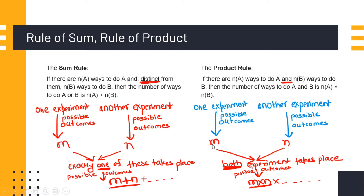Another case is where your experiments are dependent on each other and both experiments are taking place at the same time. Then the possible outcome will be m into n. This is called the rule of product. And if you are having more than two experiments, in that case we just multiply the outcome of each and every experiment.